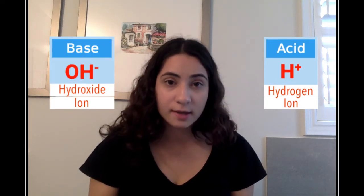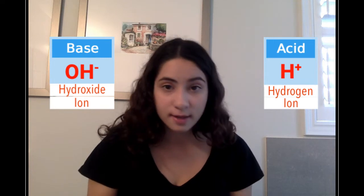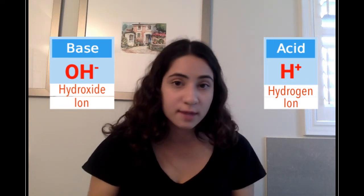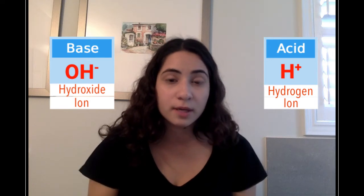Many sour or tangy liquids like lemon juice are acidic. A base, on the other hand, is a substance that releases hydroxide ions and can be seen as sort of the opposite of an acid. An example of a basic substance would be a bar of soap.